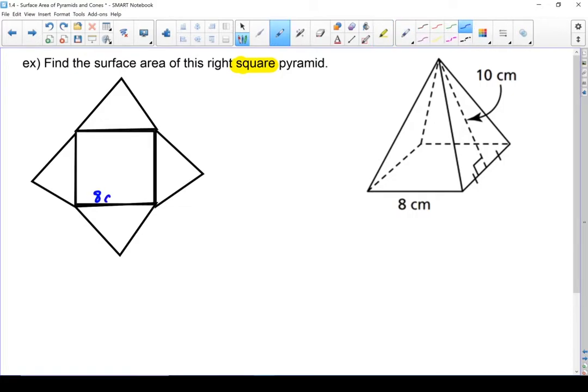Let's write some measurements onto that drawing. I know that this is 8 centimeters right from here, and I know that my height, that's my slant height to be more specific, is 10 centimeters. I've got enough information to find the surface area of this pyramid. I'm going to break it down into a couple of parts. Let's do the base.